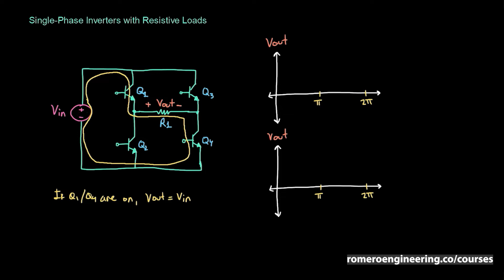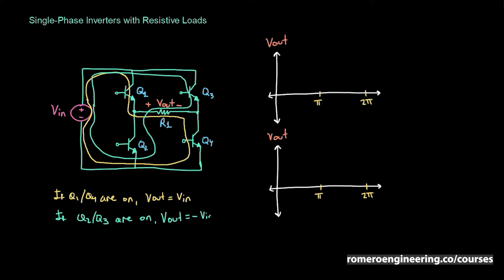Now we need to invert the polarity of the input voltage with respect to the output. We switch the opposite transistors — Q2 and Q3 ON. The circuit now has VIN connected through Q3 to the output load, through Q2, and back to the input. We've connected the positive terminal of VIN to the negative terminal of VOUT, reversing the polarity. So if Q2 and Q3 are ON, then VOUT equals minus VIN, with the opposite transistors assumed OFF.